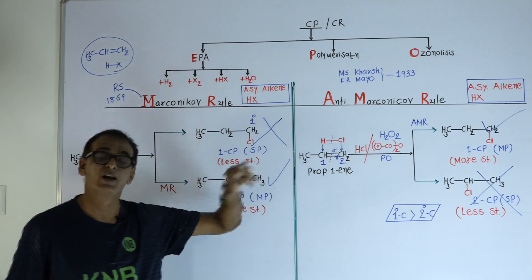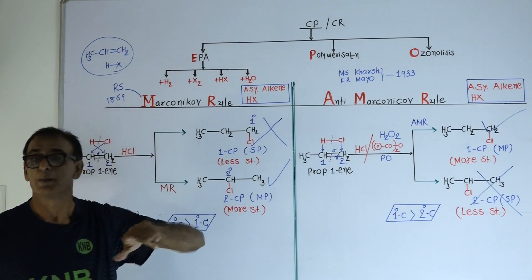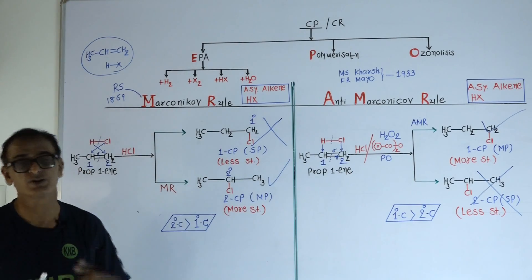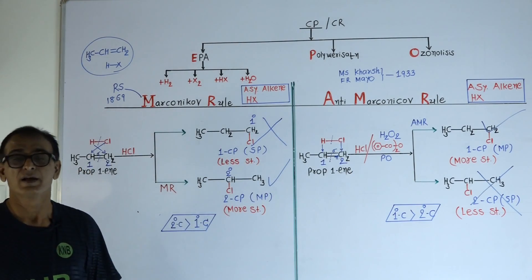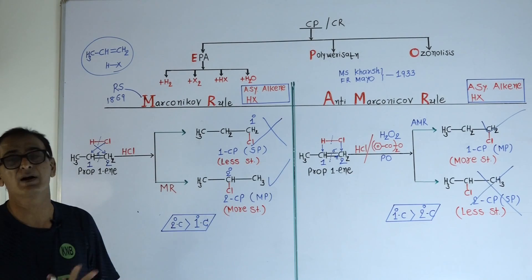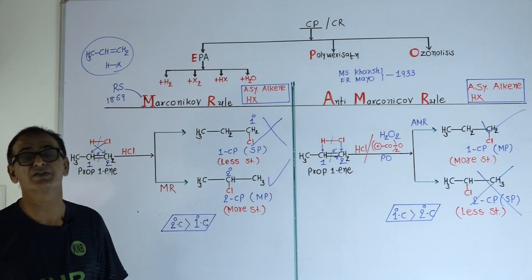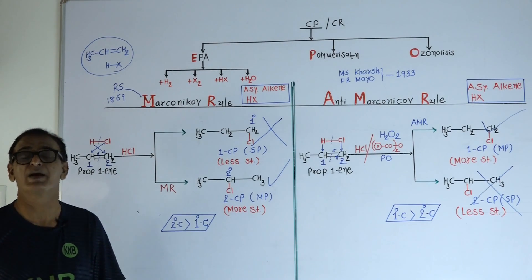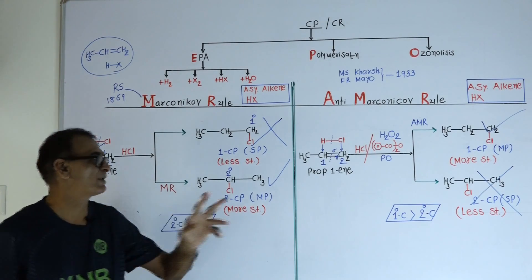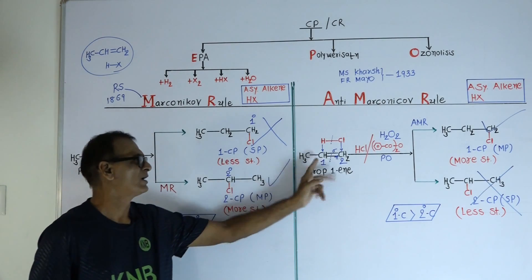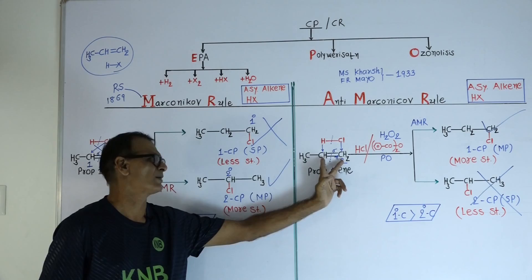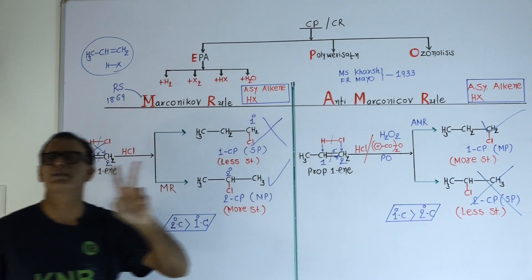In HCl, hydrogen is the more electropositive part. So during Anti-Markovnikov rule, hydrogen will attach with the carbon atom having less number of hydrogen atoms — that is, the more substituted carbon.